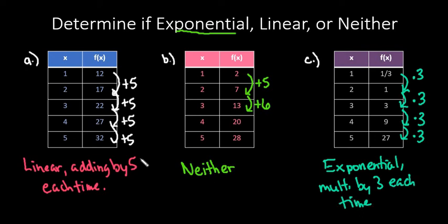So to be linear, we add by the same number each time. To be exponential, we multiply by the same number each time. And if neither of those are happening, then it is neither exponential nor linear.